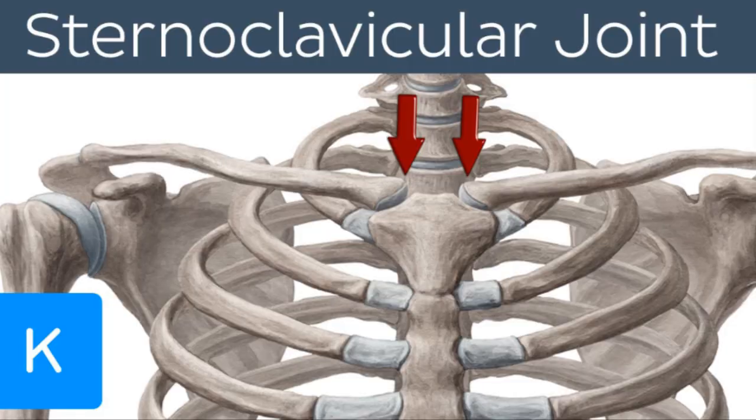The sternoclavicular joint is a saddle-type joint that allows movement of the clavicle predominantly in anterior to posterior, as well as vertical — up and down.